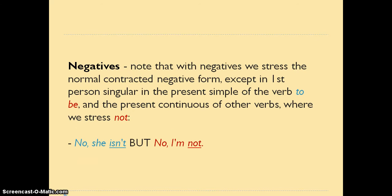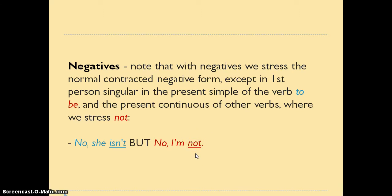Secondly, throughout the video we've seen positive statements. But what happens if we want to emphasize the negative? In this case, we can contract the auxiliaries, because what we emphasize is the whole auxiliary with 'not' in it. 'No, she isn't.' — it's stressed as a contracted form. However, with the first person singular, 'I'm not' is the only form available — we always contract 'be' with 'I'. So to emphasize it, you put the stress on 'not': 'No, I'm NOT.' For example: 'Are you single?' 'No, I'm not. I'm married.'